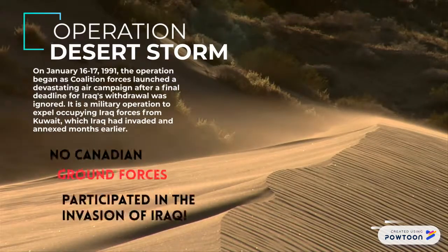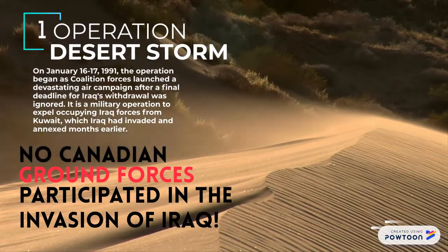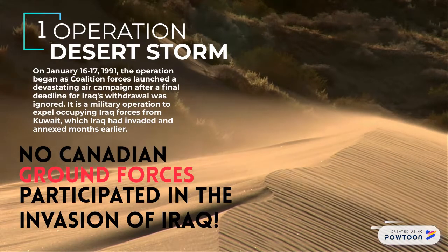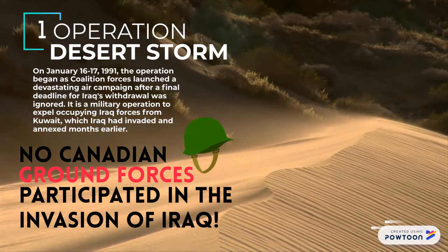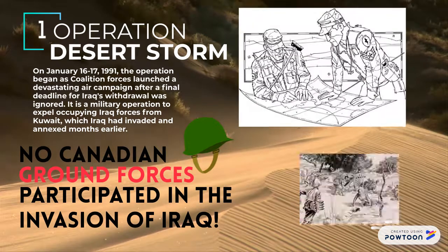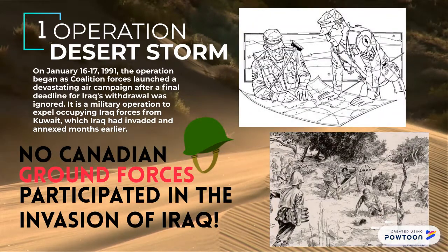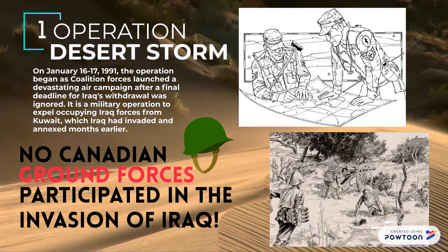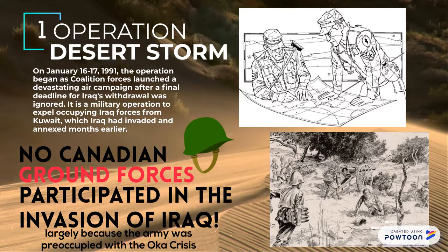Operation Desert Storm. On January 16-17, 1991, this operation began as the Coalition of Forces launched a devastating air campaign. It was a military operation to expel occupying Iraqi forces from Kuwait, which Iraq had invaded and annexed months earlier.